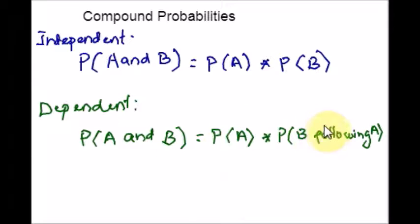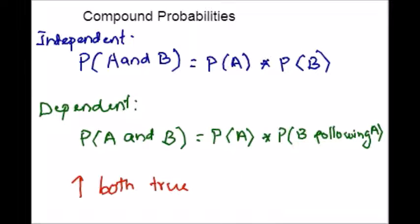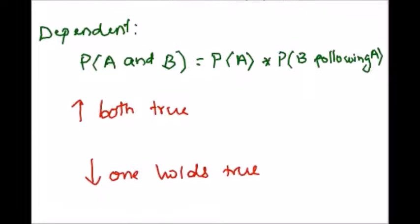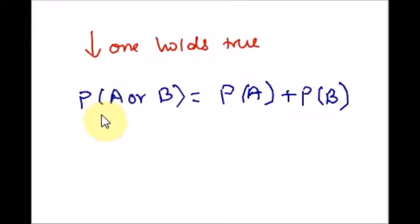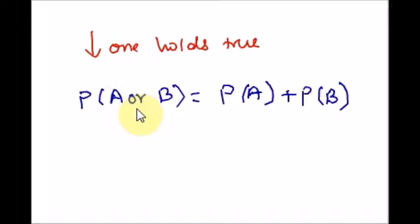When one or more part of the compound event holds true, the compound probability can be calculated as: probability of A or B, which is equal to probability of A plus probability of B. The word AND means all parts of the compound events are true at the same time, while the word OR indicates that either or both of the parts are true at a time. Basically, when the events are mutually exclusive, we use OR. When the events are not mutually exclusive, we use AND.